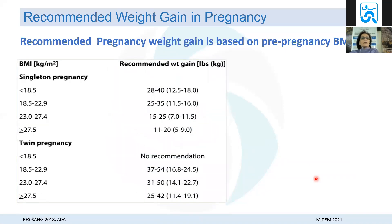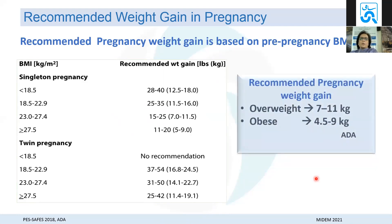Recommended weight gains: SAFES tables for our region specify targets based on pre-pregnancy BMI. ADA (American) guidelines suggest 7–11 kg for overweight women and 4.5–9 kg for obese women during pregnancy. For South Asian women with BMI over 27 in a singleton pregnancy, the maximum recommended weight gain is about 9 kg, while women with normal pre-pregnancy weight may gain up to 18 kg.